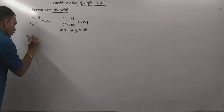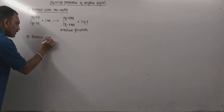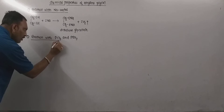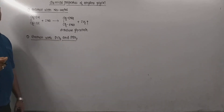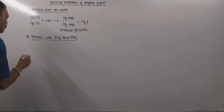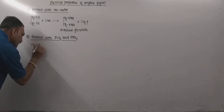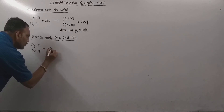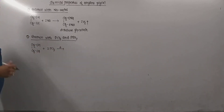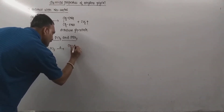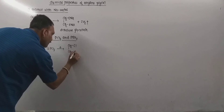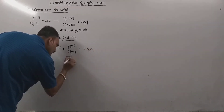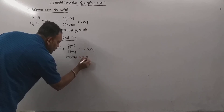The next important property is the reaction with PCl₃ and PBr₃. When we treat ethylene glycol with PCl₃, the OH group gets replaced by chlorine, leading to the formation of ethylene dichloride along with H₃PO₃. Ethylene dichloride is a vicinal dihalide.